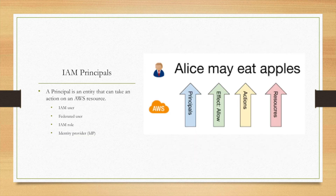An IAM principal is an entity that can take an action on an AWS resource. There are several things that belong to the IAM principal: IAM user, federated user, IAM role, and identity providers.